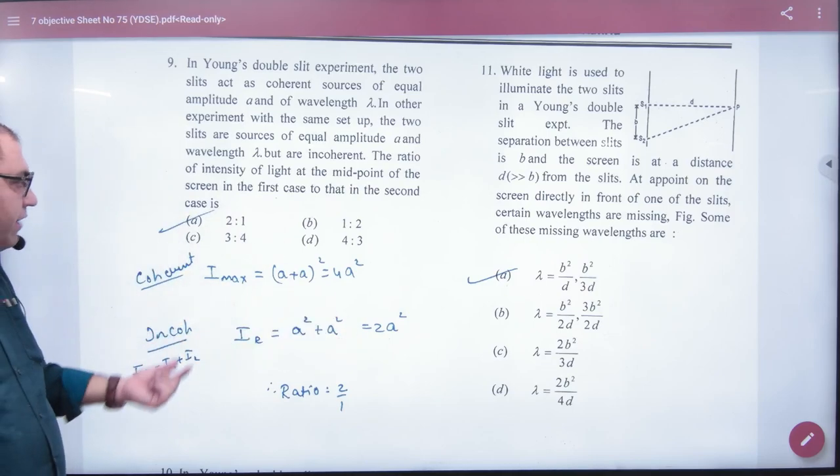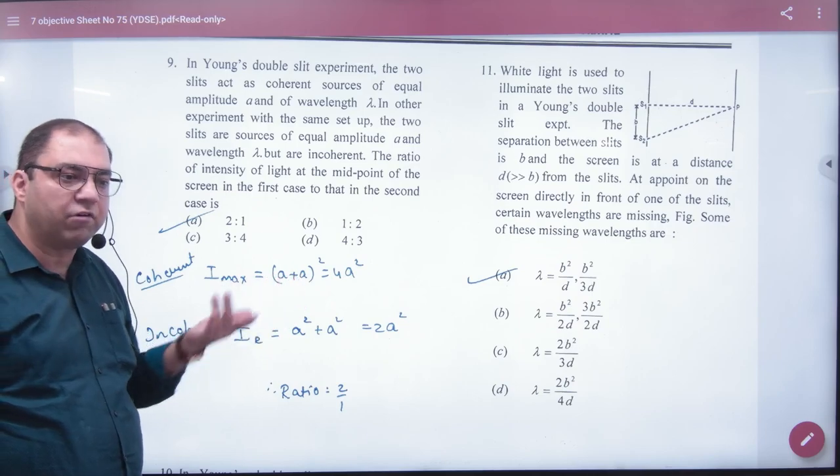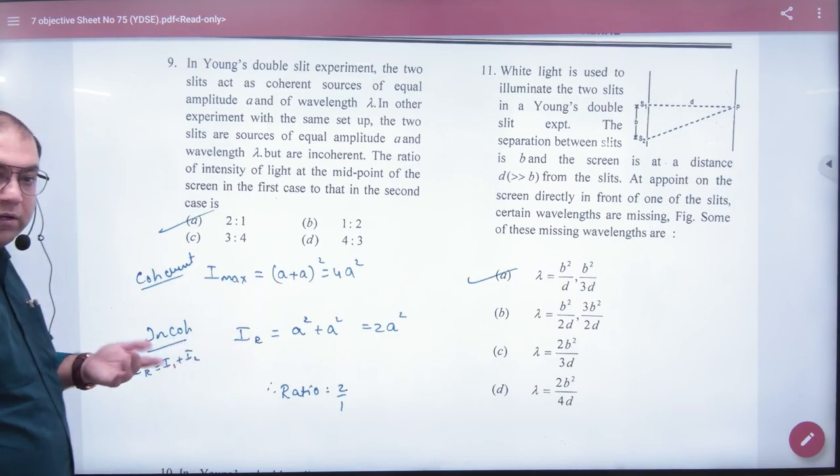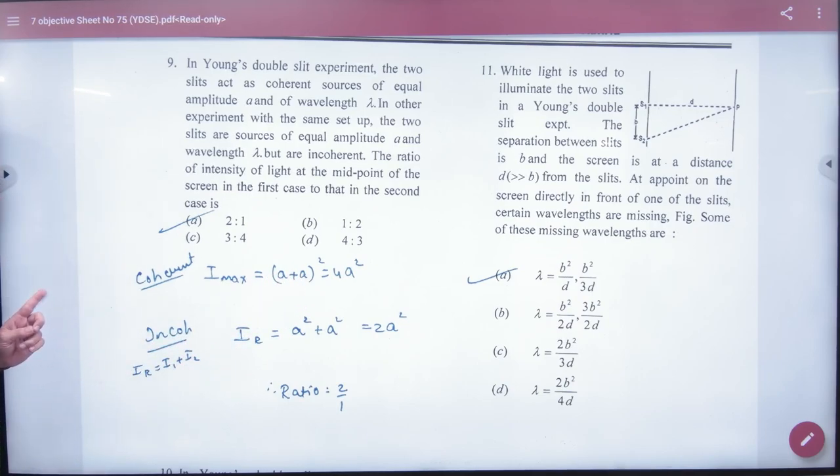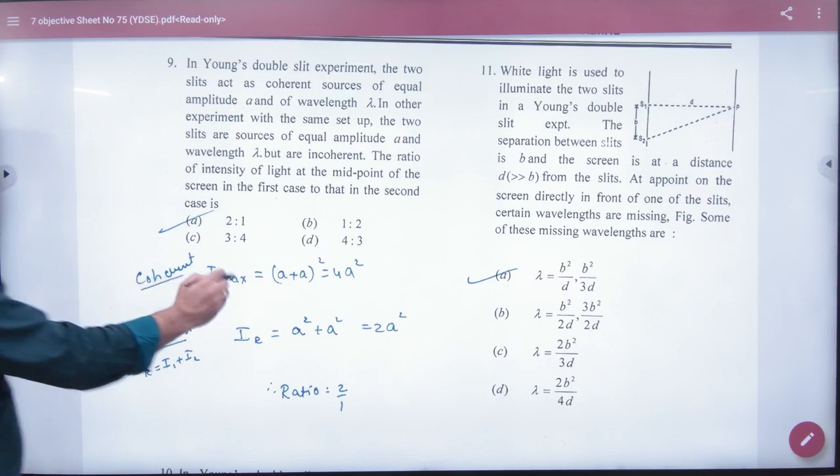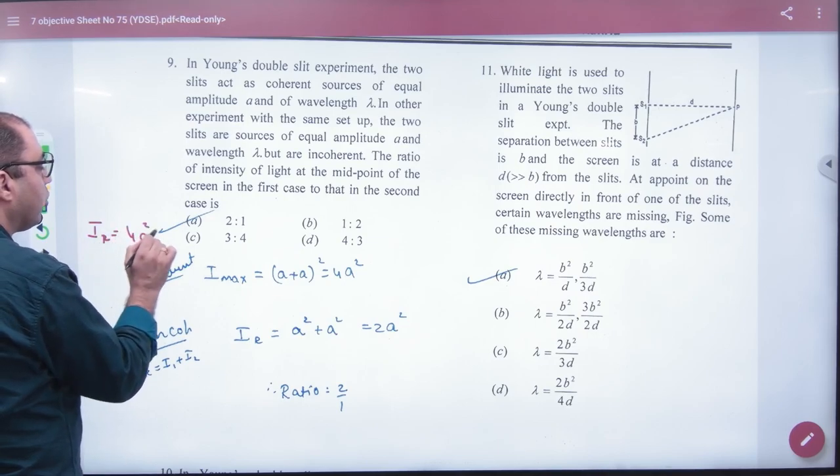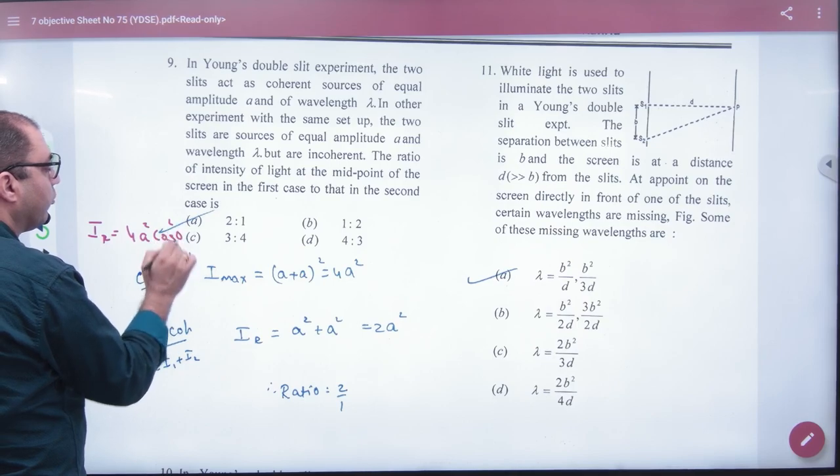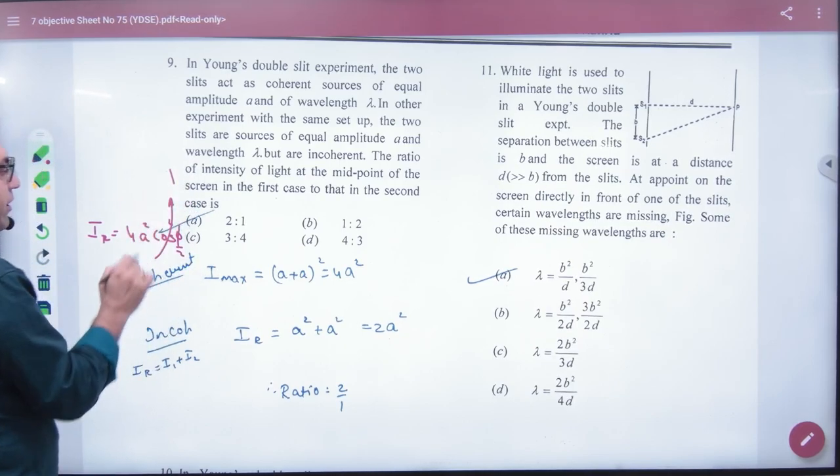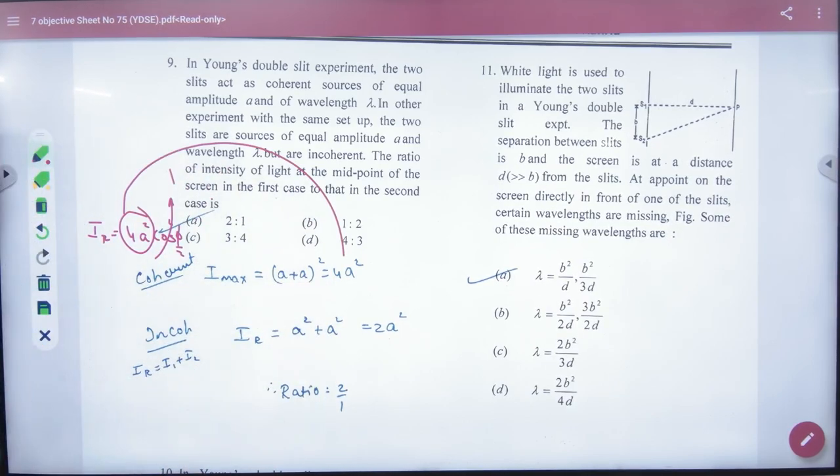What did we do with the first formula? For the maximum intensity with coherent sources, what did we do? We take the coherent formula. 4A² cos² φ/2. So for maximum intensity, what would be 4A²? Answer.